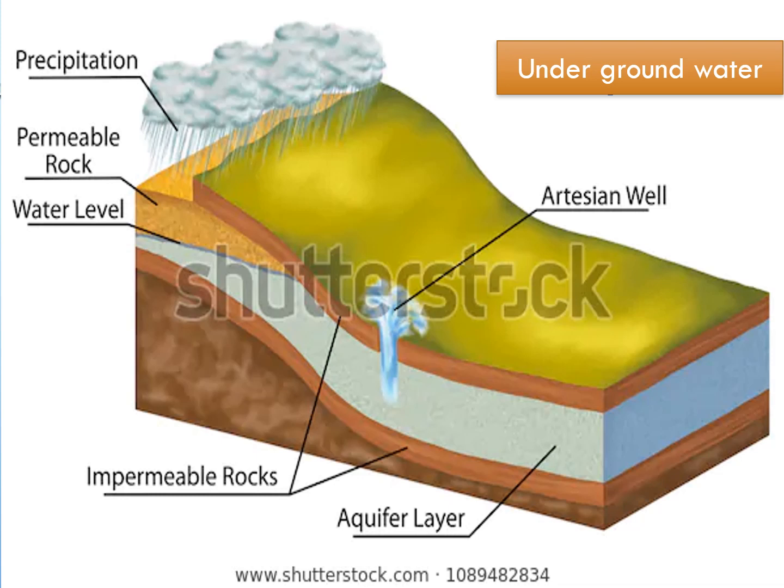Another source is underground water, or groundwater, which is that part of rainwater that seeps down through the cracks and crevices of the earth into the ground. This water is unevenly distributed, which may be due to the topography of the land surface, geological conditions, or prevailing climatic conditions.